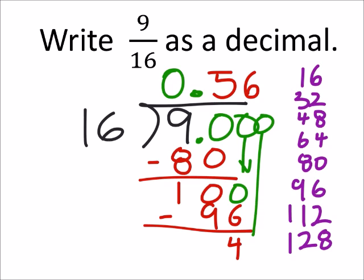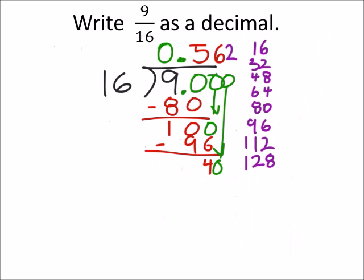So I need another zero. Well, 16 will go into 40 - looks like twice. 2 times 16, I need more space. There we go. 2 times 16 is 32, so when I subtract this out I get 8.